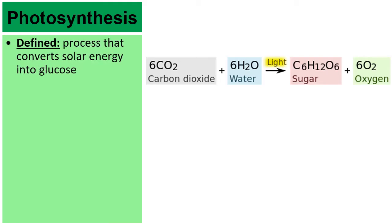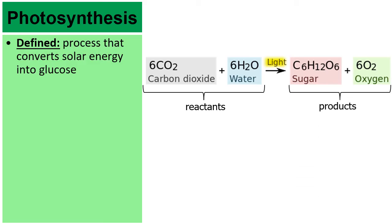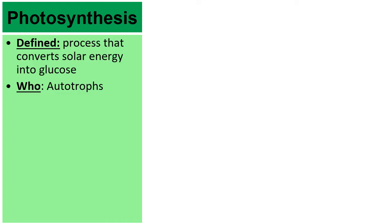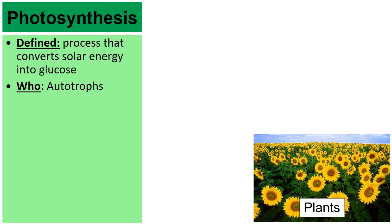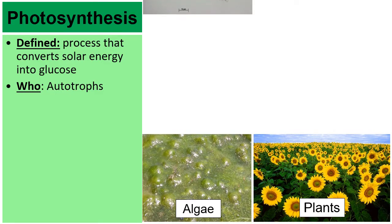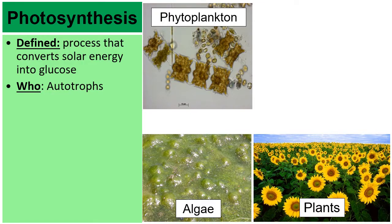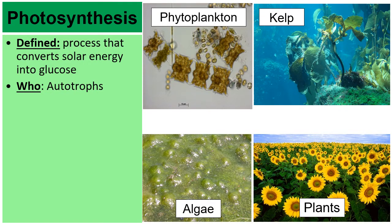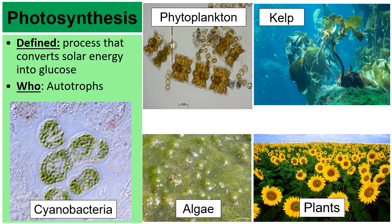Photosynthesis is the process that converts solar energy into glucose. The formula shows that carbon dioxide and water, in the presence of sunlight, produce sugars such as glucose and oxygen. Plants aren't the only ones that perform photosynthesis — autotrophs also include algae, phytoplankton, kelp, which can grow into enormous underwater forests, and even some bacteria known as cyanobacteria.